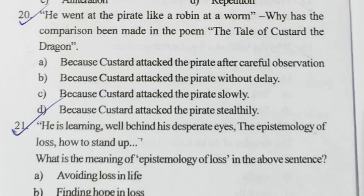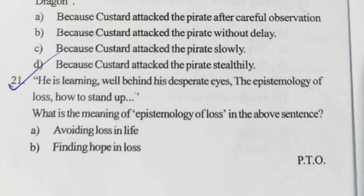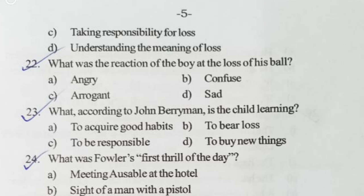Question twenty: 'He went at the pirate like Robin at a worm' — why has this comparison been made in the poem 'The Tale of Custard the Dragon'? The answer is that Custard attacked the pirate after careful observation. Question twenty-one: 'He is learning well behind his desperateness — the epistemology of loss — how to stand up.' What is the meaning of 'epistemology of loss'? Option D is correct — understanding the meaning of loss.